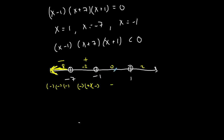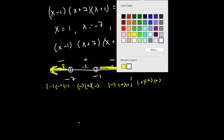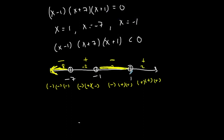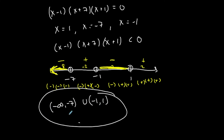Test x = 0 (between −1 and 1): (0−1) is negative, (0+7) is positive, (0+1) is positive — negative overall. That's what I want, so this interval is in the solution set. Test x = 2 (right of 1): (2−1), (2+7), and (2+1) are all positive — positive overall, not part of the solution. In interval notation, the solution is (−∞, −7) ∪ (−1, 1), not including the boundary points.